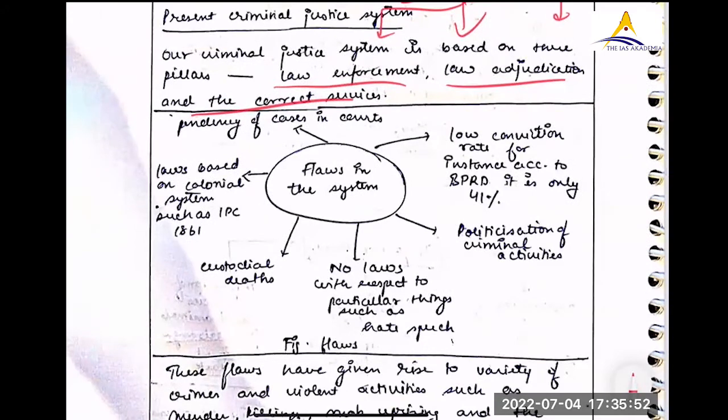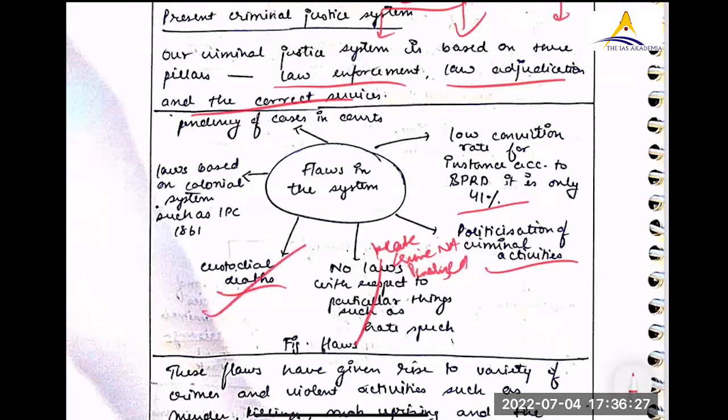law adjudication and correctional or prison services. Laws in the system. Law. Low conviction rate. BPRD. Politicization of criminal activities. No laws with respect to particular. Itna bada kyo likhna hai. Hate crime not penalized. Clearly pada lag jaye. No law with respect to particular thing such as hate speech.